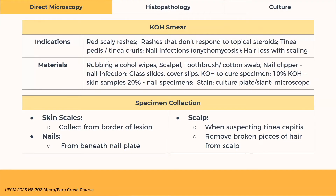Materials needed for KOH prep include rubbing alcohol wipes, scalpel, toothbrush or cotton swab, a nail clipper for nail infections, glass slides, cover slips, and KOH. The percentage of KOH used differs: 10% for skin samples and 30% for nail specimens, since nails have more keratin. Also needed are a stain, a lancet, and a microscope. For specimens: collect skin scales from the border of the lesion, from under the nail plate for nails, and remove broken pieces of hair and scaling pieces from the scalp.